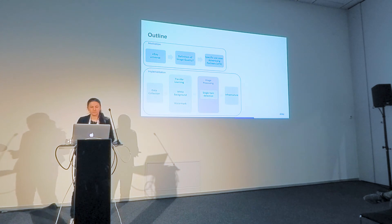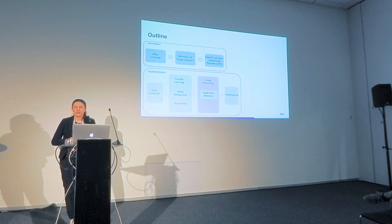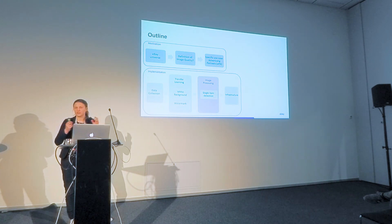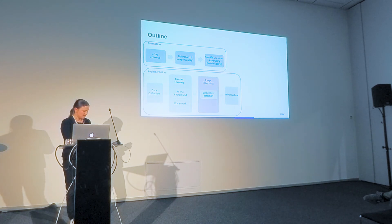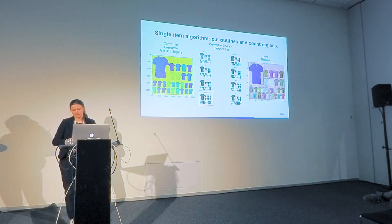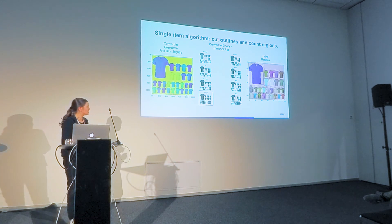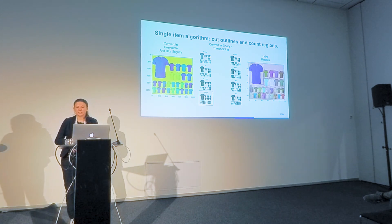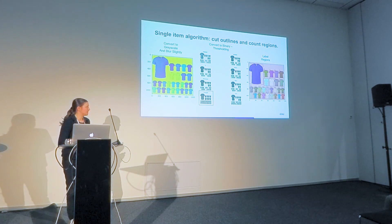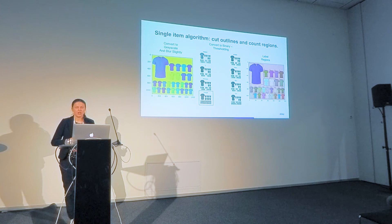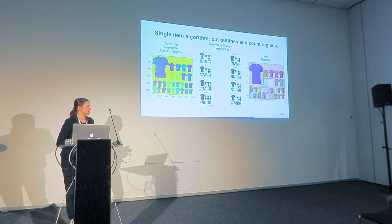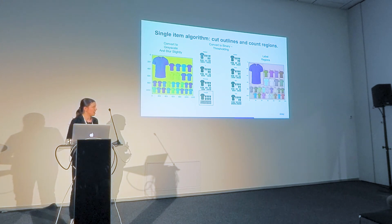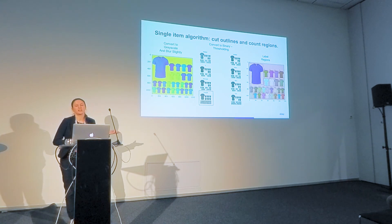Once we can filter images based on white background and watermark, we developed an algorithm to count objects on the picture as a post-processing step. We wanted to ensure images contain only one object, filtering out cases like several t-shirts in one image. Working with clean data, we convert the image to grayscale, apply thresholding to create a binary representation, find connected components, label the regions, and count them to ensure there is only one object in the image.